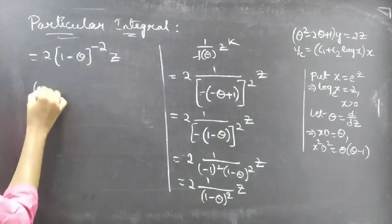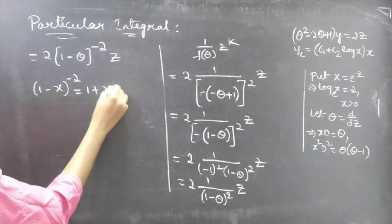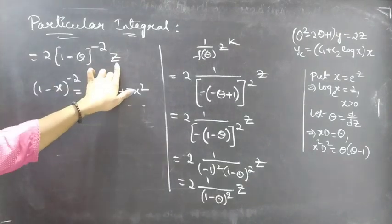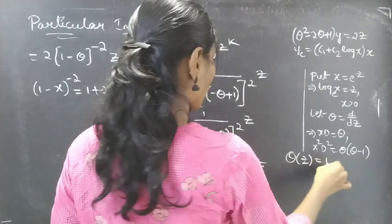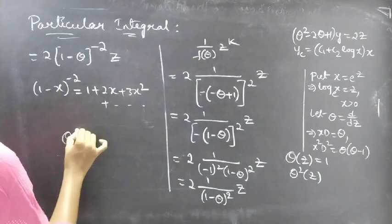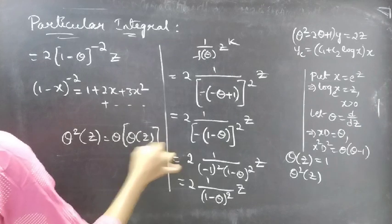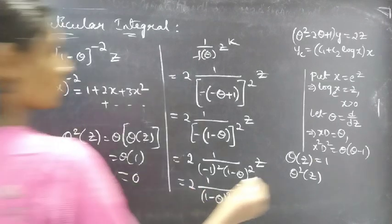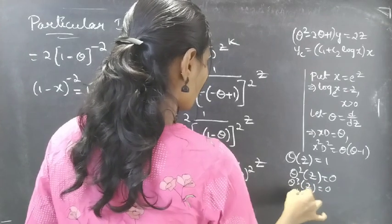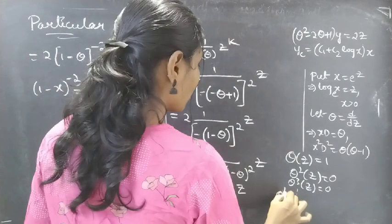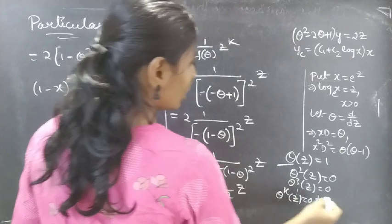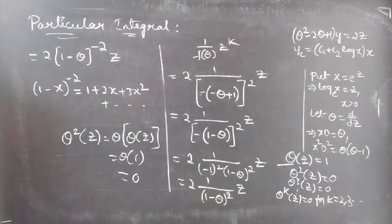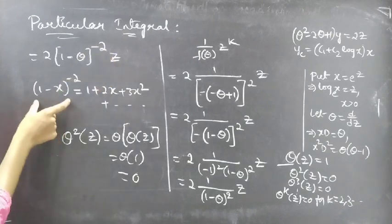We expand using the binomial series formula: (1 minus x) to the power minus 2 equals 1 plus 2x plus 3x squared plus so on. Before expanding, we find the derivatives of z: theta of z equals 1, theta squared of z equals theta of 1 equals 0, and likewise theta cubed of z equals 0. In general, theta to the power k of z equals 0 for k equal to 2, 3, and so on. Keeping this in mind, we proceed to expand (1 minus theta) to the power minus 2.